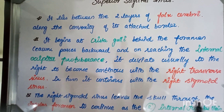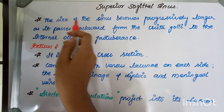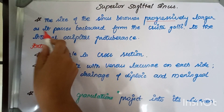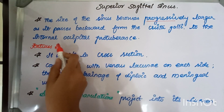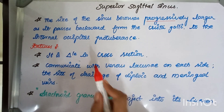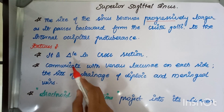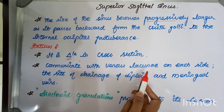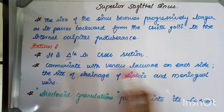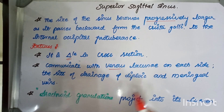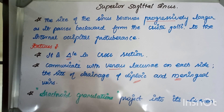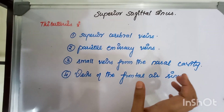The right sigmoid sinus leads to the right internal jugular vein. The size of the sinus becomes progressively larger as it passes backwards from the crista galli to the internal occipital protuberance. Its features include: it is triangular in cross section, it communicates with venous lacunae on each side, the diploic and meningeal veins drain into it, and arachnoid granulations project into its lumen.